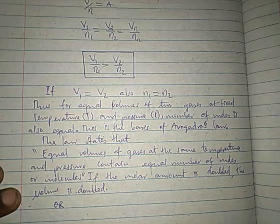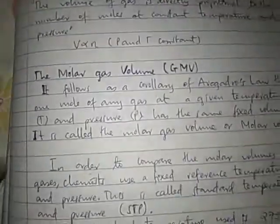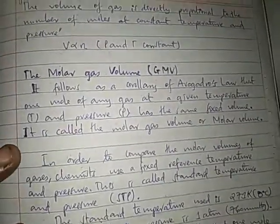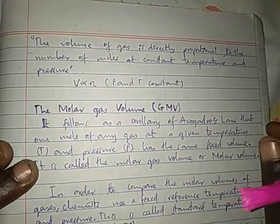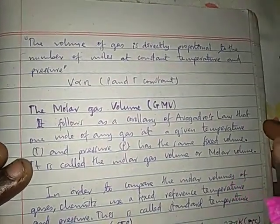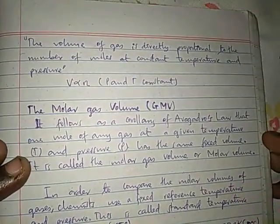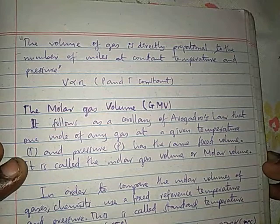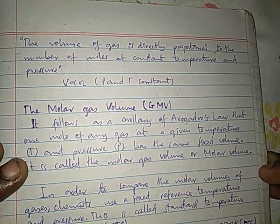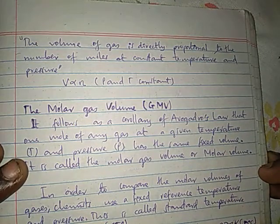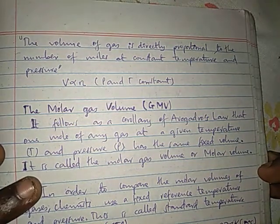So equal volumes of gases at the same temperature and pressure contain the same amount of gas. Alternatively, we can state it as: the volume of a gas is directly proportional to the number of moles at constant temperature and pressure.